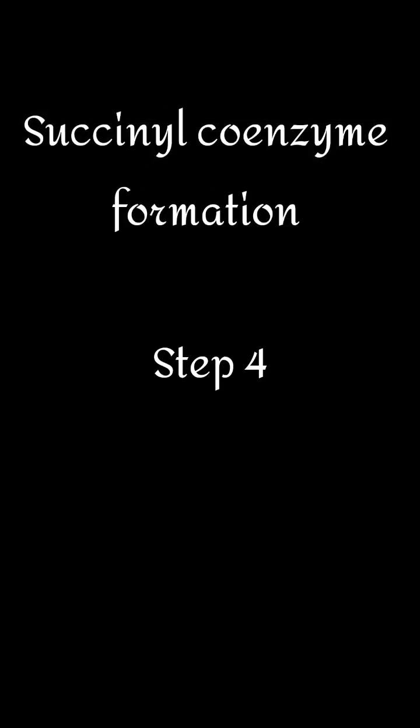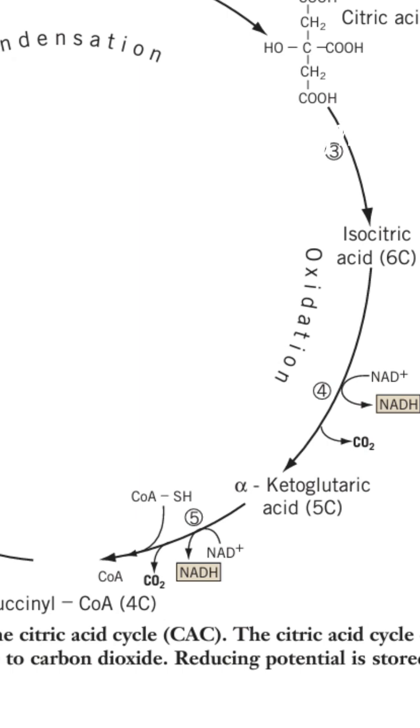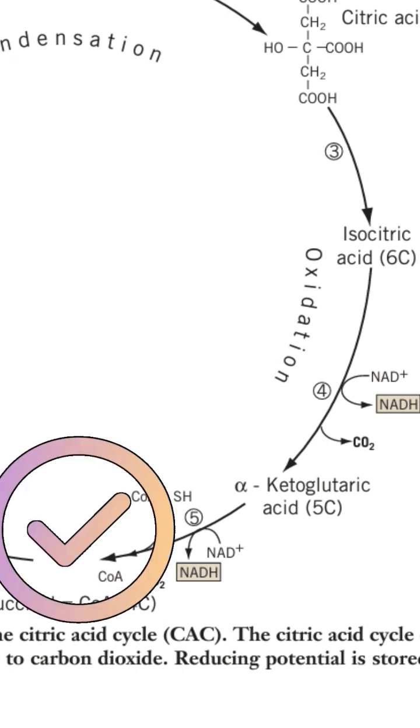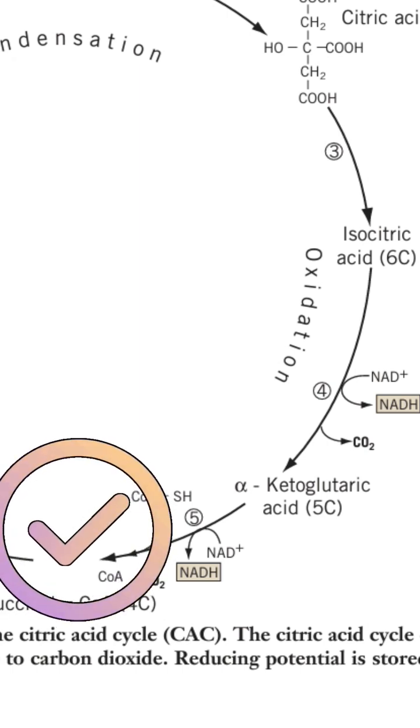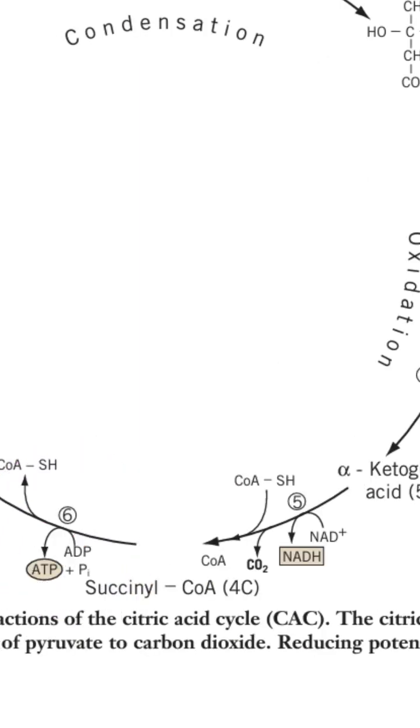Step 4: Succinyl coenzyme A formation. In the fourth step, alpha-ketoglutarate is oxidized and binds to coenzyme A to form succinyl coenzyme A in the presence of alpha-ketoglutarate dehydrogenase enzyme, which liberates a second molecule of NADH, carbon dioxide, and a proton.